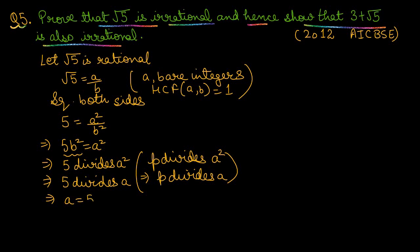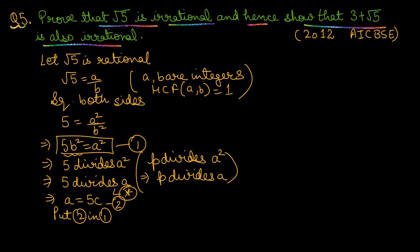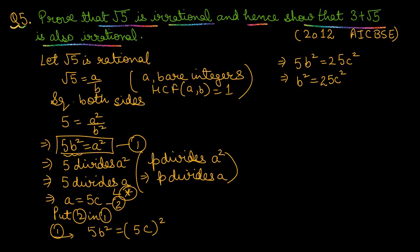Substituting a = 5c back into 5b² = a², we get 5b² = 25c², which simplifies to b² = 5c². This implies 5 divides b². Applying the same theorem, 5 also divides b.